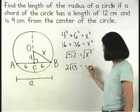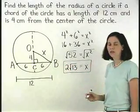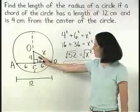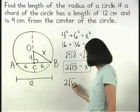So we have 2 root 13 equals X. So the length of the radius of the circle is 2 root 13 centimeters.